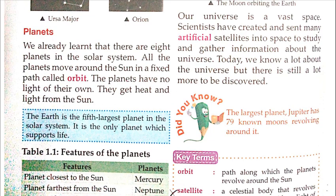Did you know? The largest planet Jupiter has 79 known moons revolving around it — jaise dharti ke chaaro taraf chand ghoomta hai, waise hi Jupiter ke chaaro taraf 79 moons ghoom rahe hain. Interesting fact!